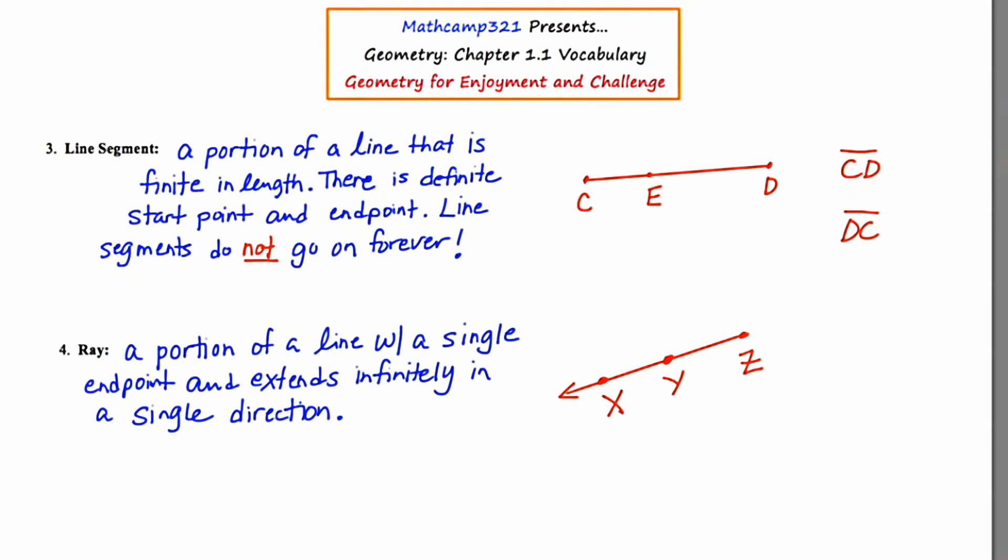Now when you name a ray, you're going to use two letters just like the line or the line segment. But the first letter has to be the start point. So where does this ray start? Well, it starts at Z. So I can call this ray ZY, starting at Z and goes in the direction of Y forever. And again, there's a special symbol used and that's the little ray symbol above. Or if you wanted to, you could call this ray ZX. Starts at Z and goes in the direction of X forever.